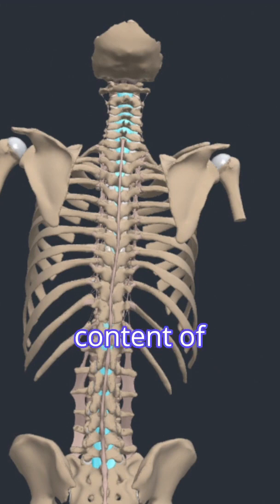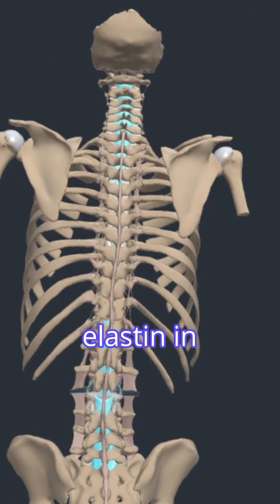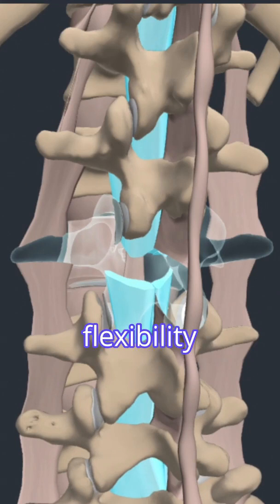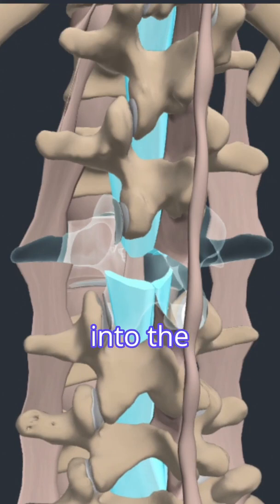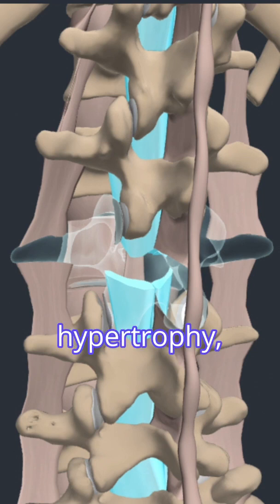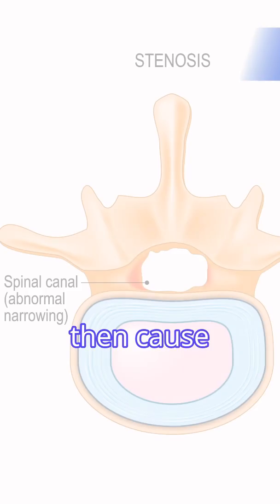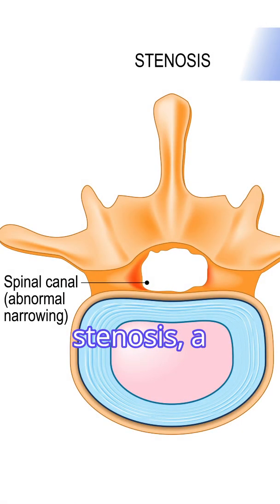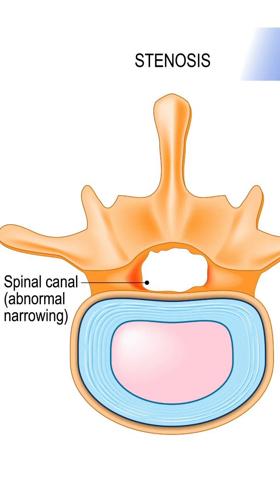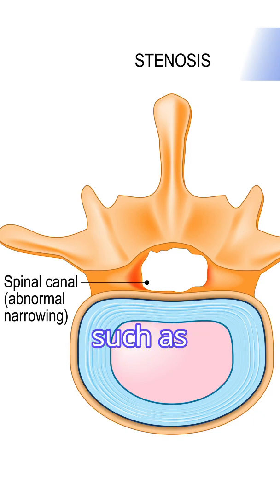Interestingly, the high content of elastin in this ligament gives it flexibility and prevents it from buckling into the spinal canal during extension. It is possible for the ligament to hypertrophy, which could then cause spinal stenosis — a narrowing of the spinal canal. Spinal stenosis can also result from other factors such as tumors or bone spurs.